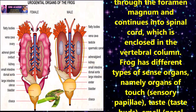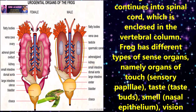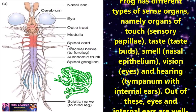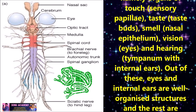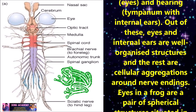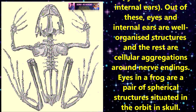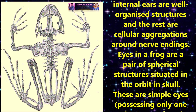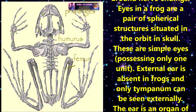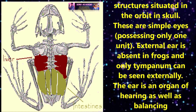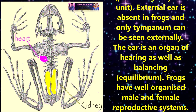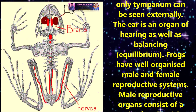The frog has three different types of sense organs: organs of touch (sensory papillae), taste, smell, vision, and hearing. Of these, the eyes and internal ears are well-organized structures, and the rest are cellular aggregations around nerve endings. The eyes of the frog are a pair of spherical structures situated in the orbit of the skull. They are simple eyes possessing only one unit. The external ear is absent in frogs and only the tympanum can be seen externally. The ear is an organ of both hearing and balance.